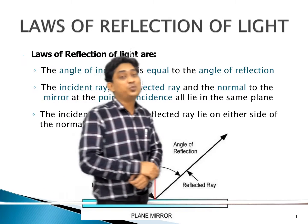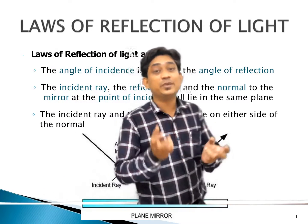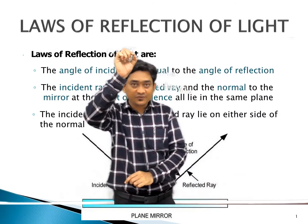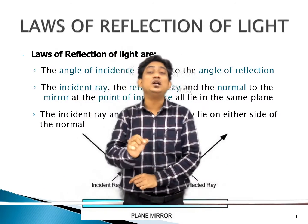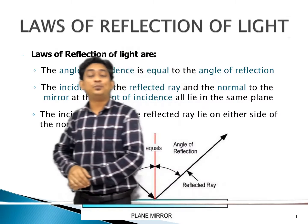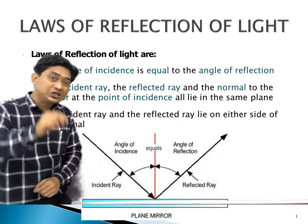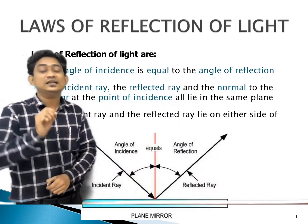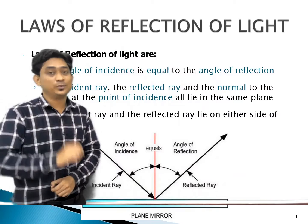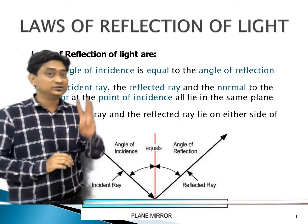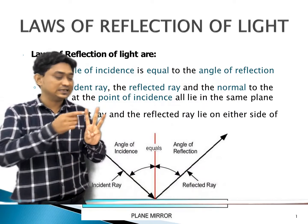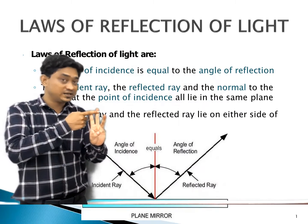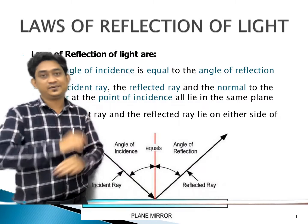Next, very important — what is the normal? Any line which is perpendicular to the plane mirror exactly at the point of incidence is called the normal. So now three definitions are complete: incident ray, reflected ray, and normal.